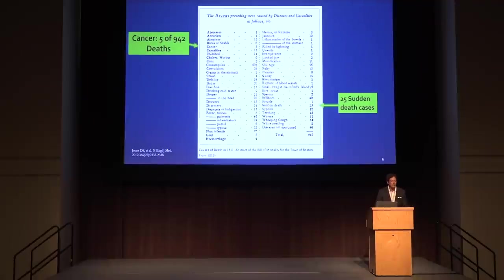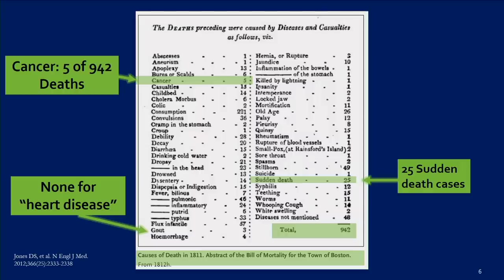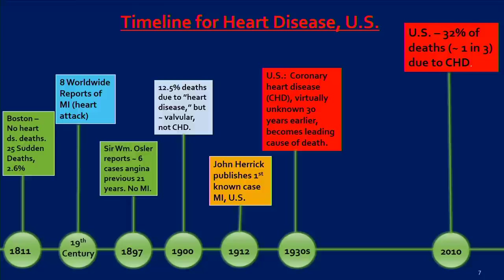Also from Joan's paper, this is a list of causes of death in Boston in 1811. If you notice on the lower left, there is none listed for heart disease. On the far right, 25 sudden death cases. In the upper left, cancer: five of 942 deaths. We'll come back to this as well.